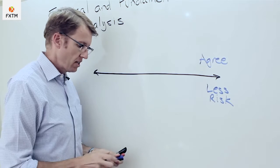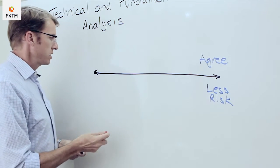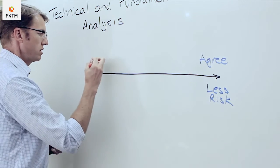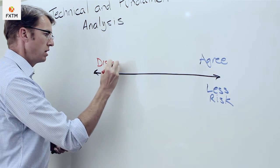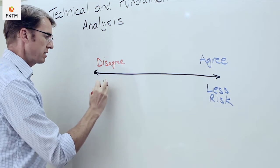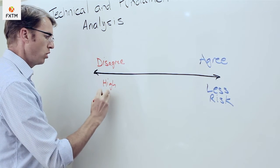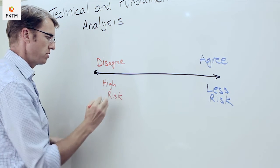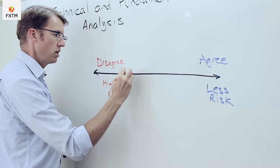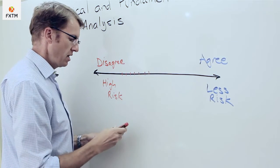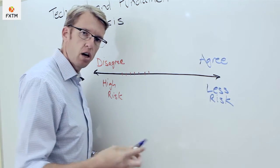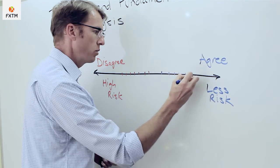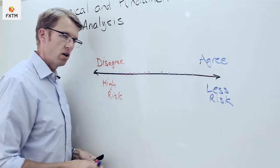Now as you might imagine, therefore, if we are seeing a situation where they disagree, so the fundamentals do not agree with the underlying trend, then we would expect that there's a lot more risk. Now obviously it's going to be very rare that we're in a situation where it's all or nothing. We're usually somewhere in the middle here, and this is a model that will help us to understand, well, how close am I to a low risk environment versus a high risk environment?